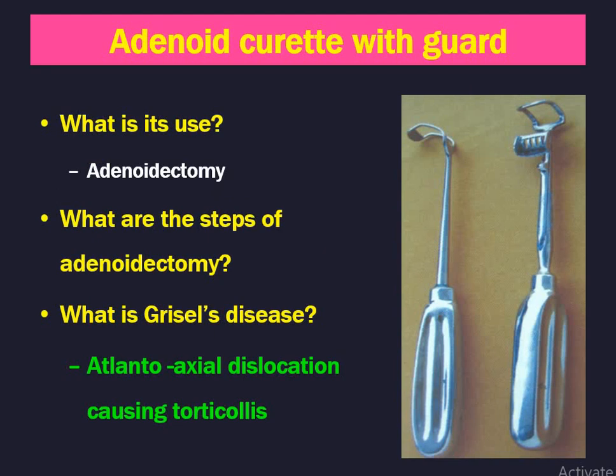Next instrument is adenoid curette with guard — one of the commonly asked questions in the exam. Its use is during adenoid surgery. You might be asked about differences in patient position between adenoid and tonsil surgery. In tonsillectomy, a sandbag is kept under the shoulder blade. But in adenoidectomy it is better not to keep the sandbag under the shoulder blade, because there might be Grisel's disease — defined as atlanto-axial dislocation causing torticollis — as neck extension may traumatize the longus colli muscles, leading to atlanto-axial joint dislocation after 5 to 7 days.